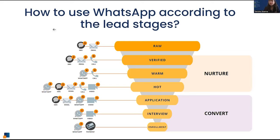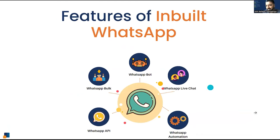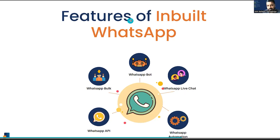Now let's move to the product and show how inbuilt WhatsApp can be used with the CRM. There are different kinds of WhatsApp activities that can be done: first, bulk messaging using approved wire templates via API; second, drip marketing communication in WhatsApp using approved templates; third, one-on-one chat inside the marketing automation CRM; and fourth, a bot that answers repetitive questions and queries.